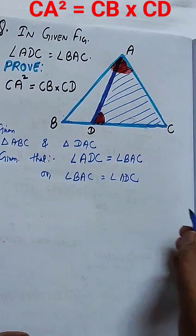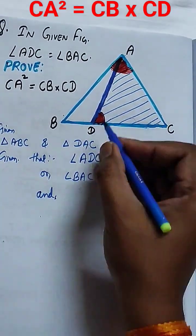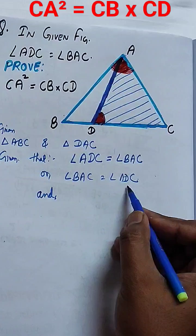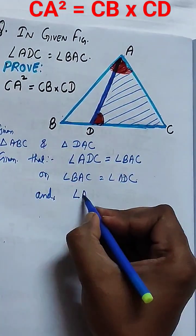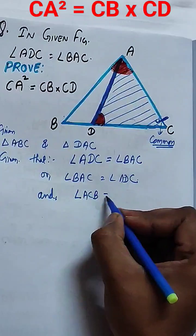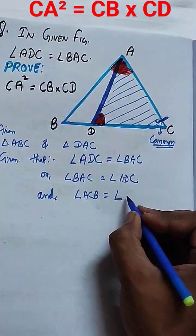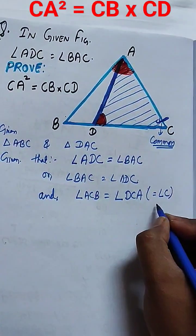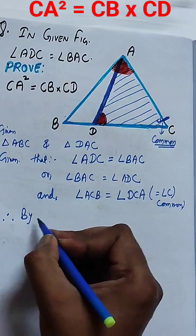We take both triangles, triangle ABC and triangle DAC, and we can see that angle ADC equals angle BAC as given. And angle C is common to both the given triangles, that is angle ACB equals angle DCA.